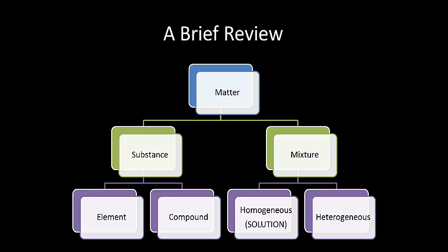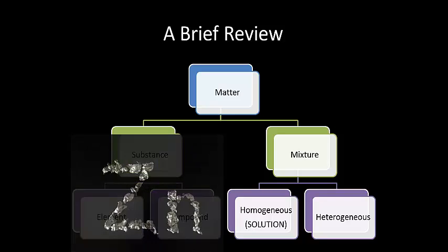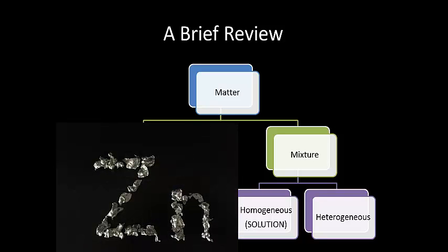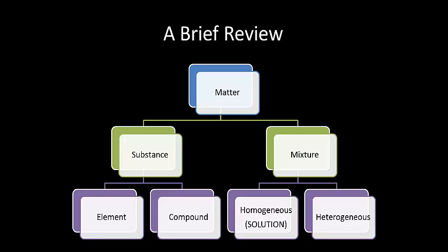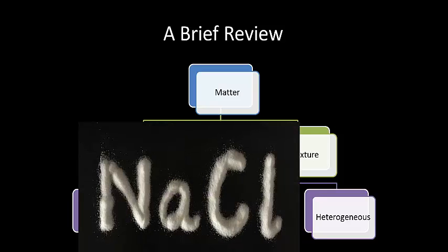Substances can either be elements, which are found on the periodic chart, or compounds, which are composed of more than one type of element chemically bonded together.